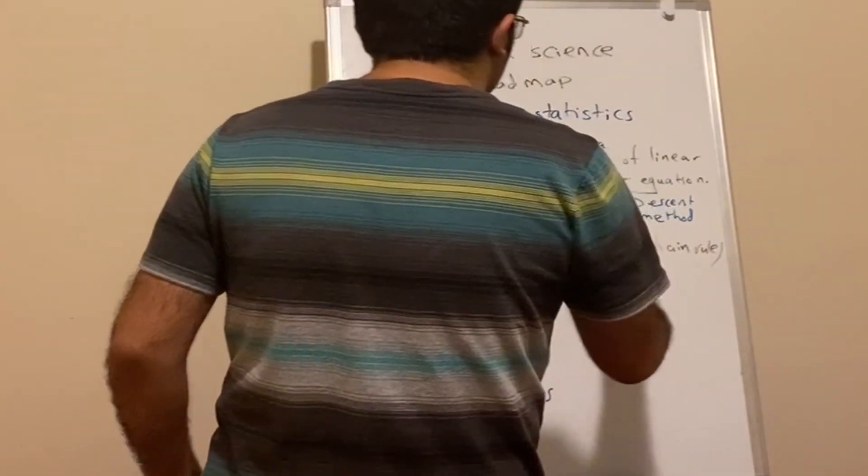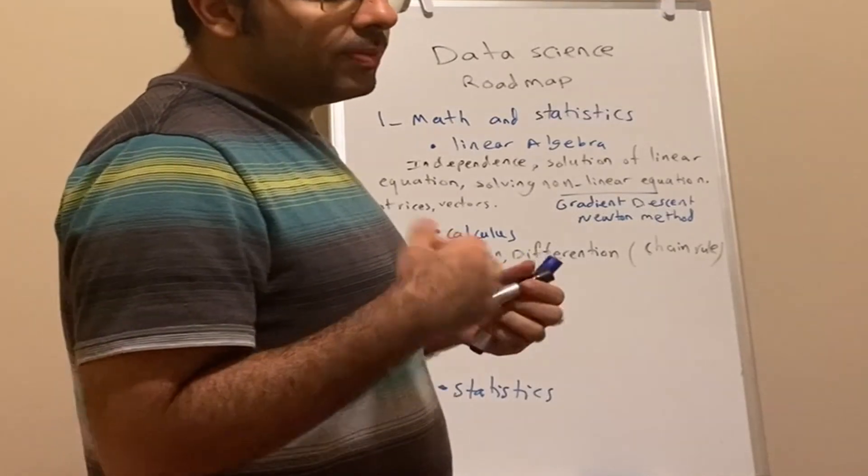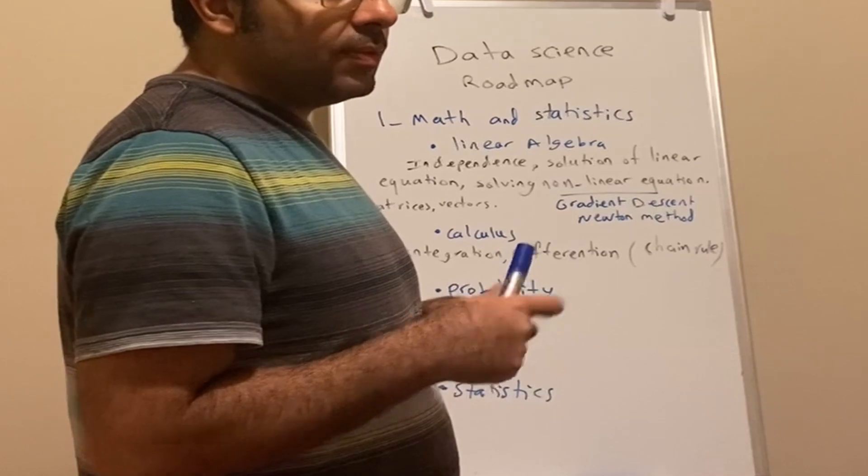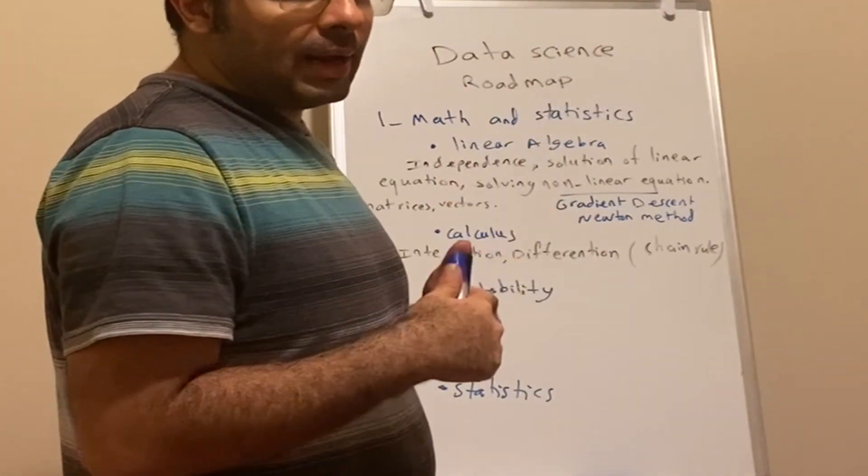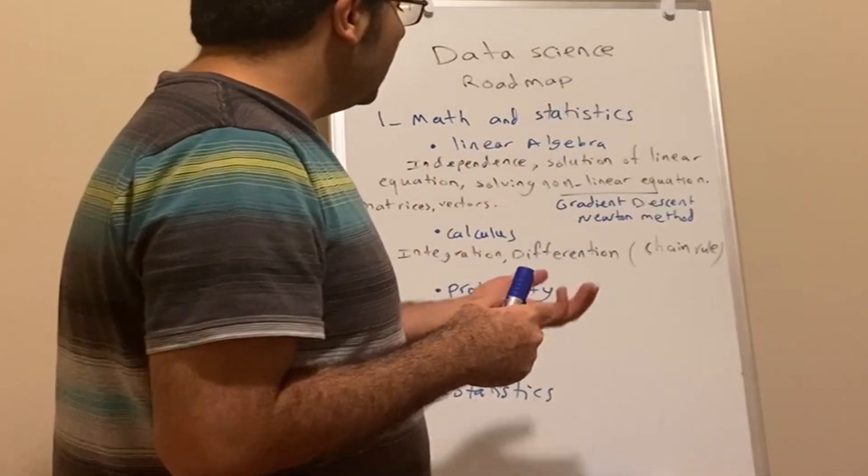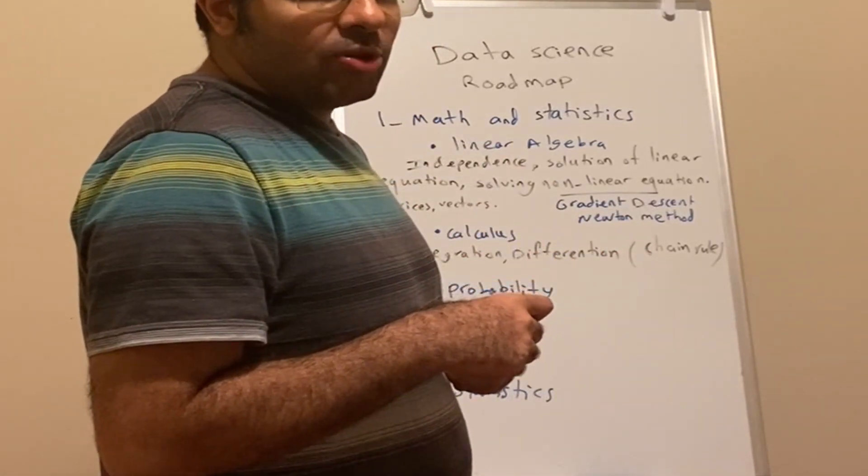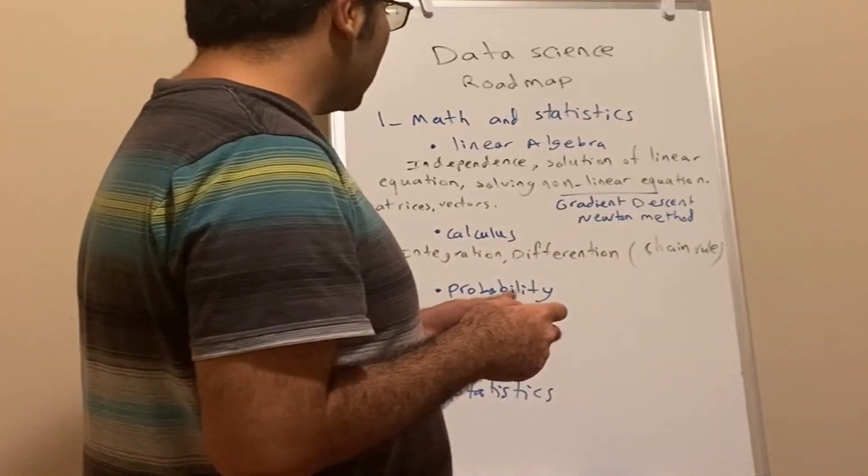This chain rule is going to show up when you go to deep learning or any other concept. For example, when you want to solve gradient descent, you need to be able to take the gradient of the objective with respect to the parameters you want to minimize. Or when you want to understand backpropagation in deep learning, you need to understand the concept of chain rule. It's actually quite important.